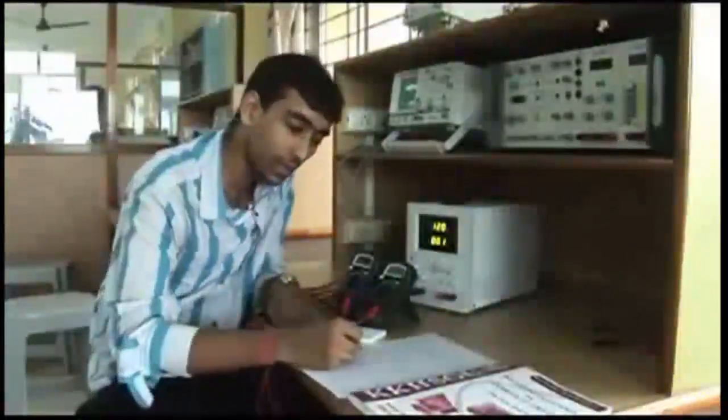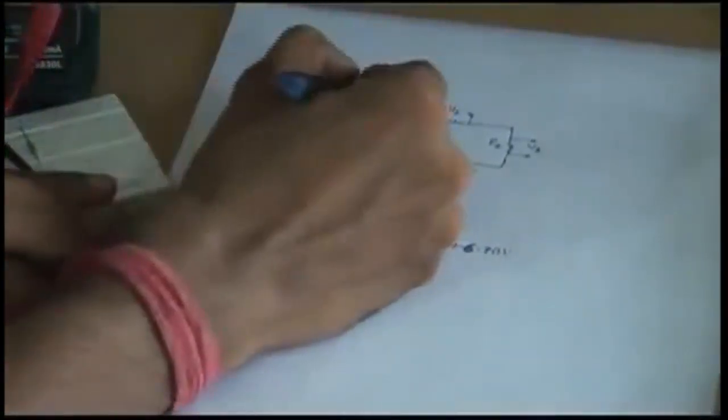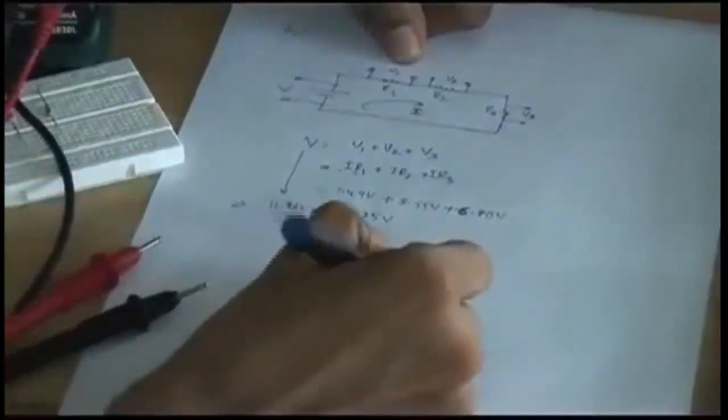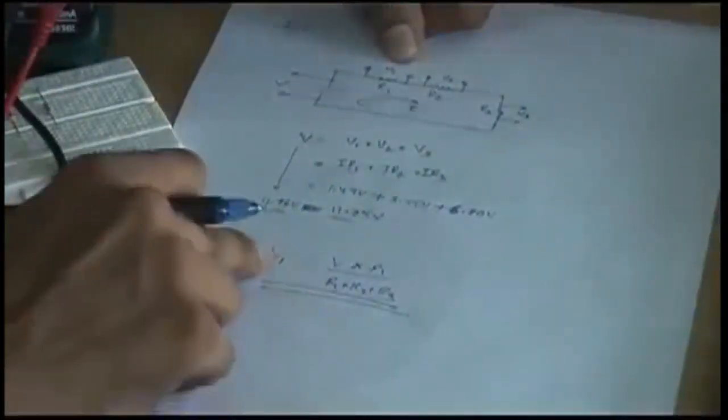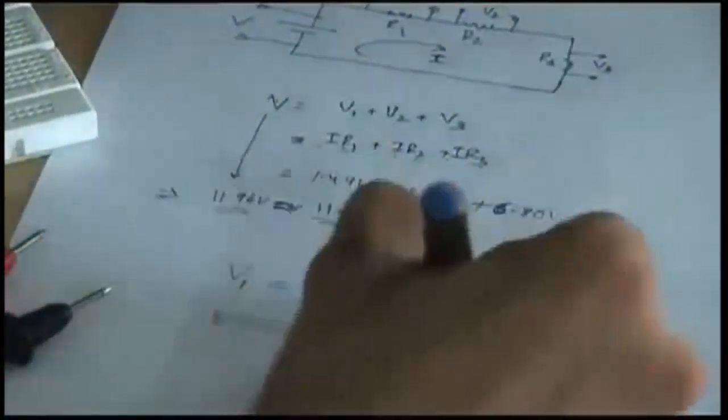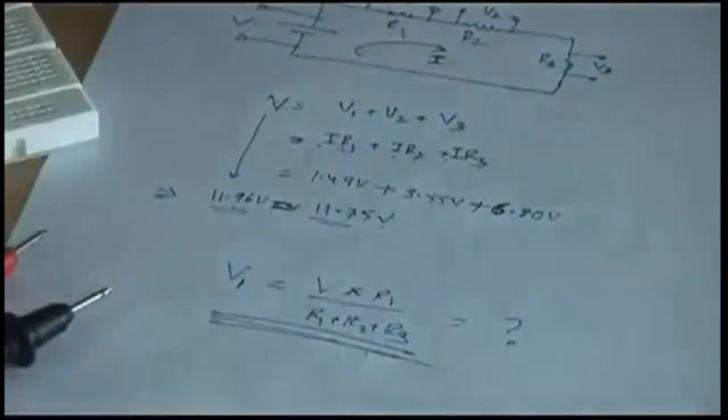If you want to calculate V1 theoretically, the formula is: V1 equals the total voltage V multiplied by R1, divided by R1 plus R2 plus R3. This is the voltage divider formula and gives you the theoretical value for the voltage across each resistor.